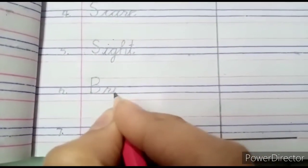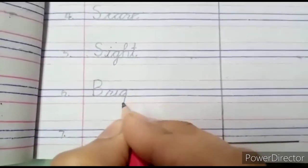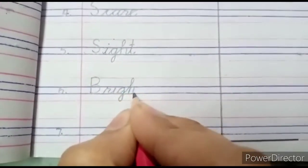Next word is Brighter. B-R-I-G-H-T Bright and then if you put E-R then what will become? Brighter. This is your word okay.